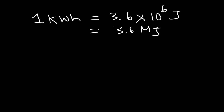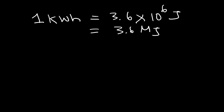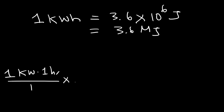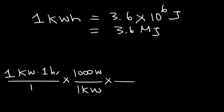So that's basically 3.6 megajoules. Now let's show the conversion — let's show that these two are in fact equal to each other. I'm going to start with one kilowatt hour, which is basically one kilowatt times one hour. Now one kilowatt, as we said before, is equal to a thousand watts.